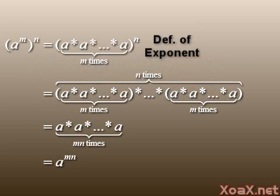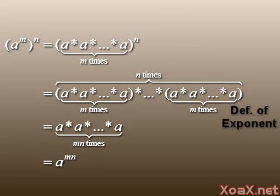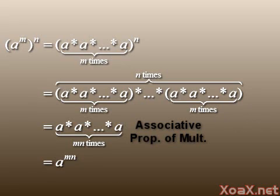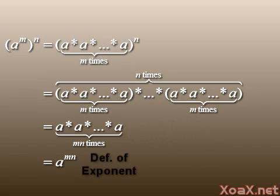To prove this, we begin with the left side and expand a to the m. Using the definition of exponent again, we have this multiplied by itself n times. All of this equals a multiplied m times n times by associativity. This equals a to the m times n by our definition of exponent.